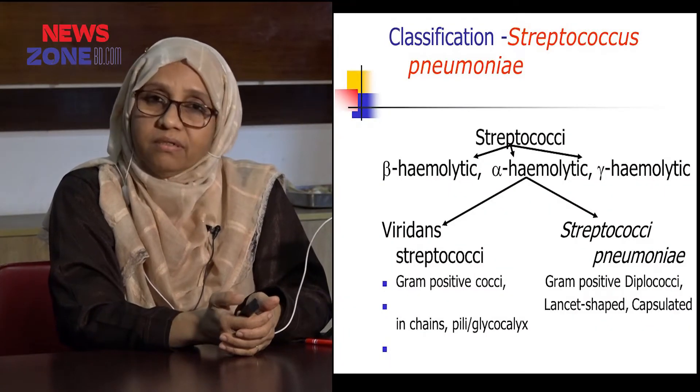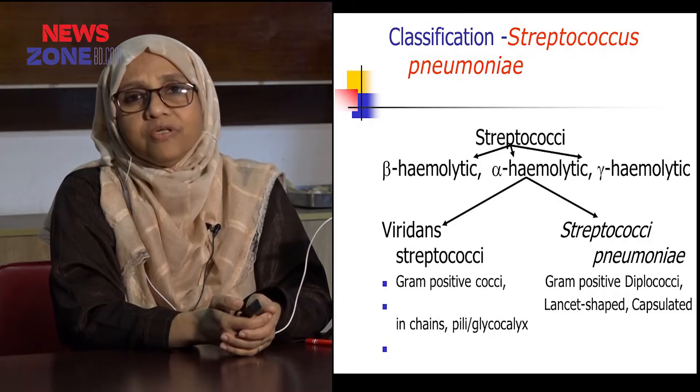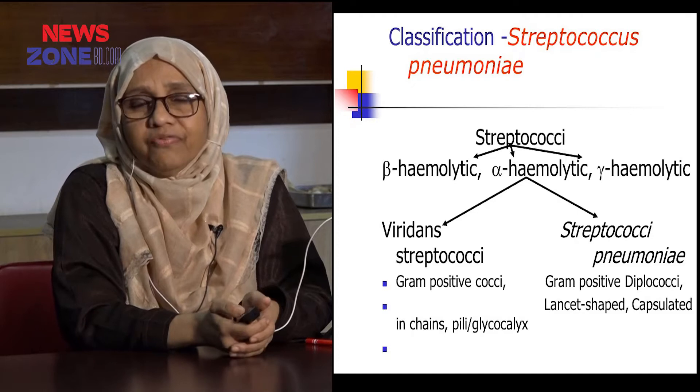Regarding Streptococcus pneumoniae, I should remind you a little bit about the classification of Streptococcus, because it has a complicated classification. Streptococcus pneumoniae falls into the category of alpha-hemolytic on blood agar plate. Among alpha-hemolytic streptococci, we have two organisms: one is Streptococcus pneumoniae and the other is the viridans group of streptococci.